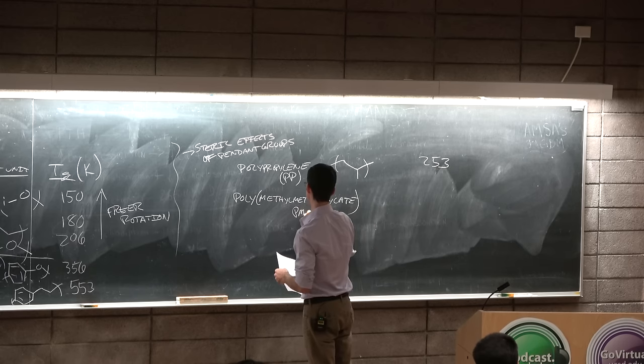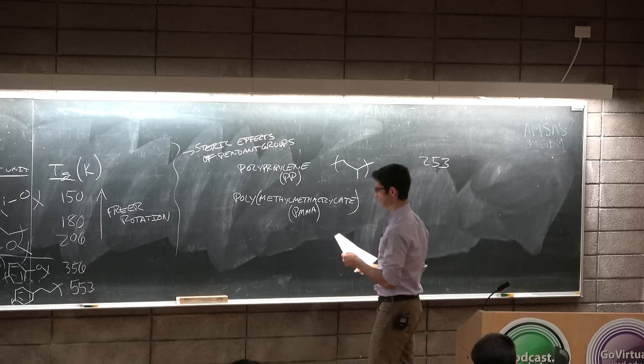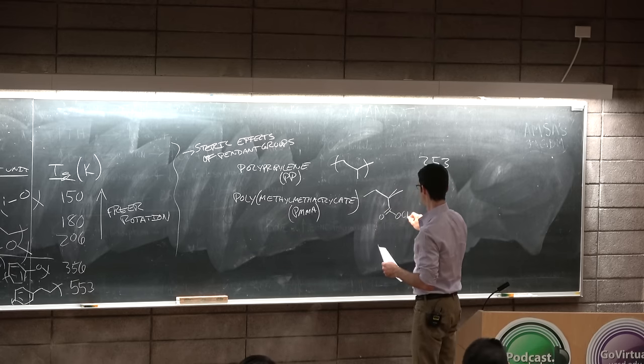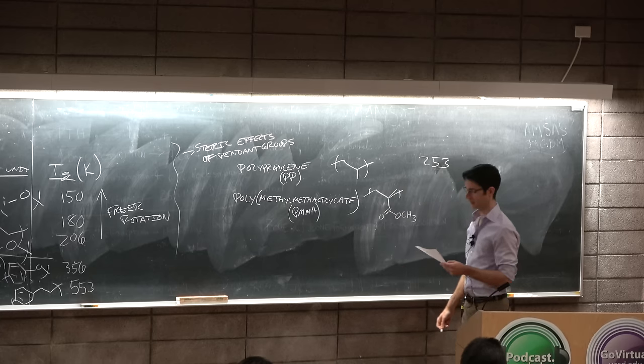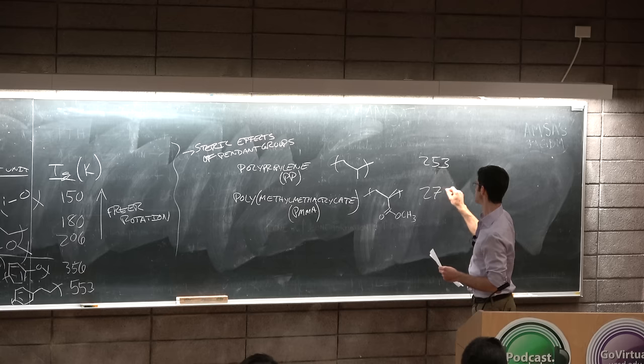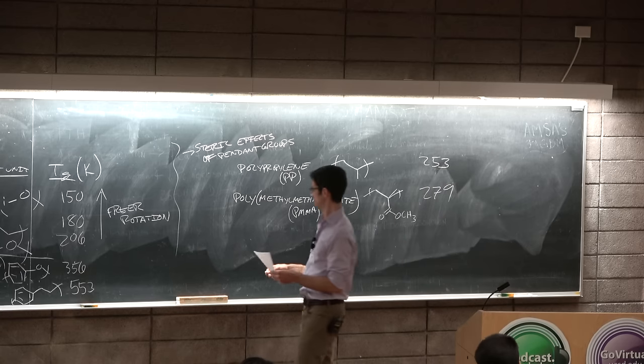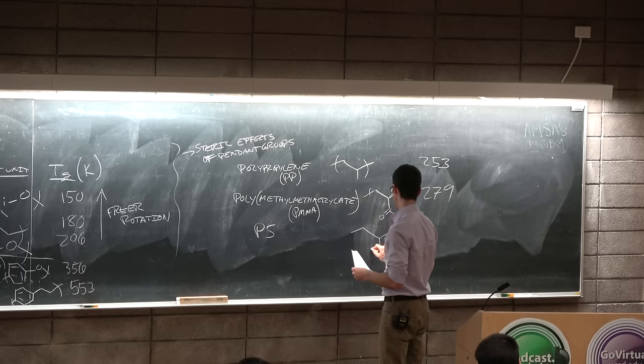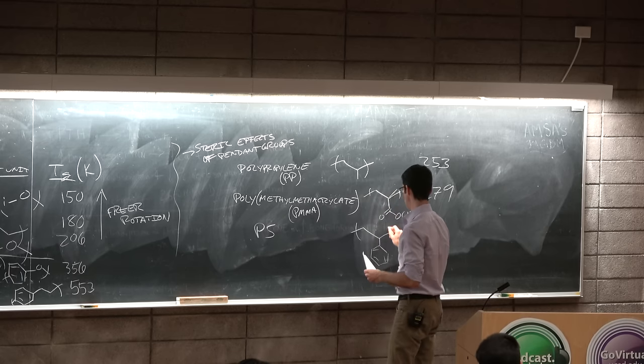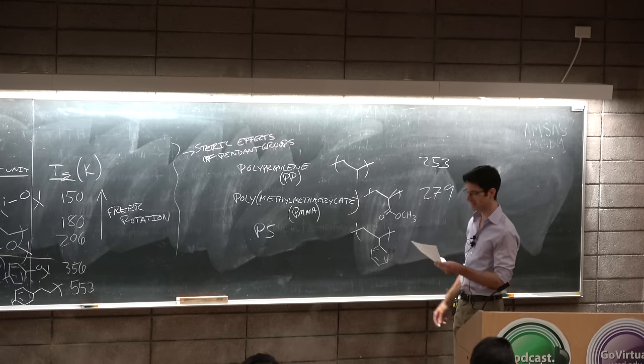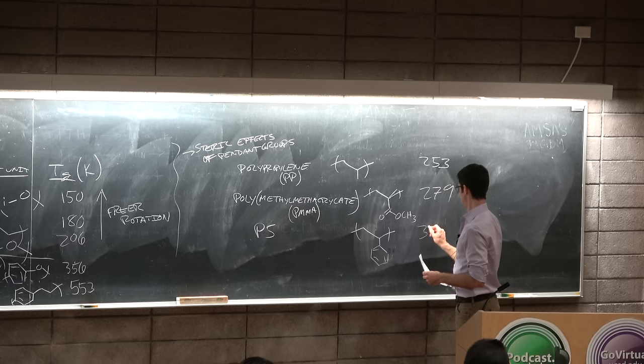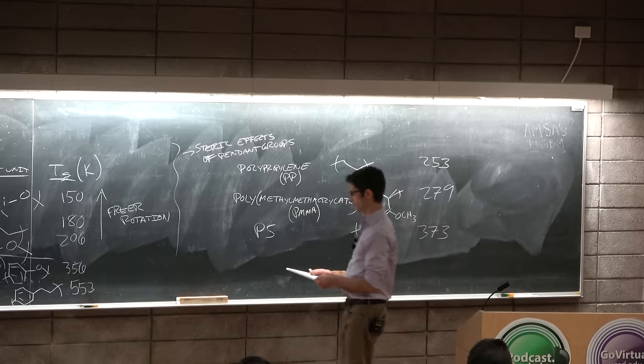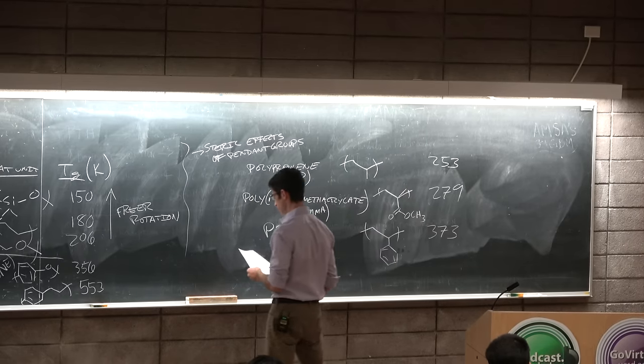So if you look at polypropylene, so essentially all synthetic carpets, probably the stuff that the seat back cushions are made out of, at least the fabric is polypropylene, which is this. And it's 253. Polypropylene is abbreviated PP in the recycling symbols. Polymethyl methacrylate or PMMA or plexiglass has a bulkier group as a side chain and its TG is 279.